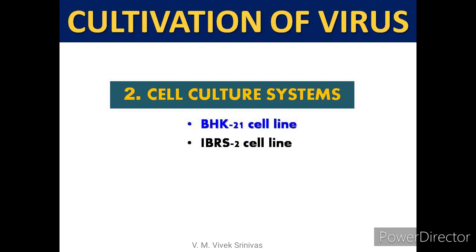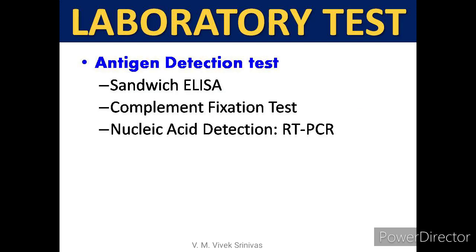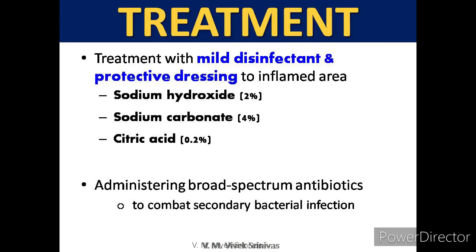The second method of cultivation is cell culture using BHK-21 cells (baby hamster kidney cells) and IBRS-2 cell lines. Laboratory tests for diagnosis include sandwich ELISA and complement fixation test for antigen detection, and reverse transcriptase PCR. Treatment of infected animals involves mild disinfectants such as 2% sodium hydroxide, 4% sodium carbonate, or 0.2% citric acid with protective dressing of inflamed areas, plus antibiotics to prevent secondary bacterial infections.